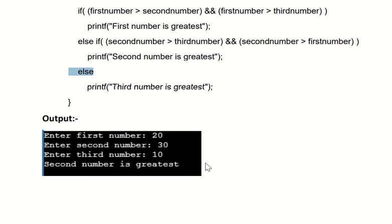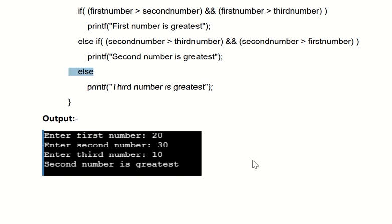Here is a sample output: enter the first number — for example 20; enter the second number — for example 30; enter the third number — for example 10. So obviously the second number is the greatest. Thank you all.